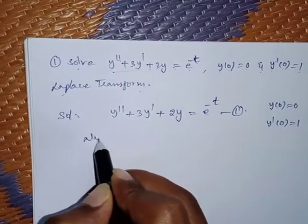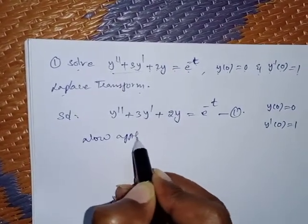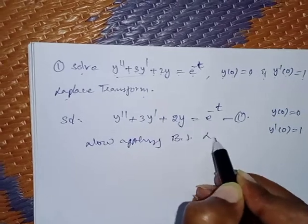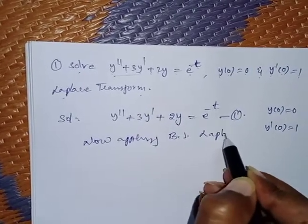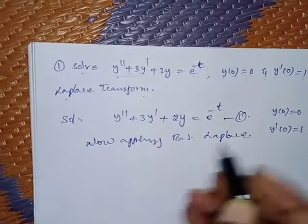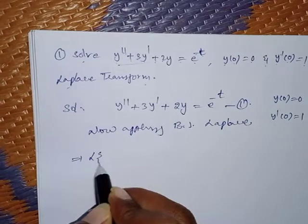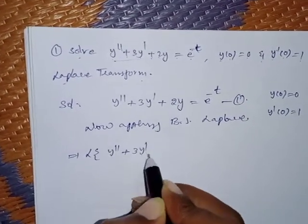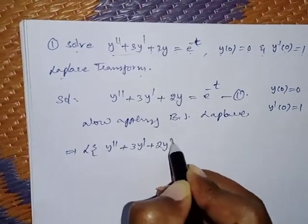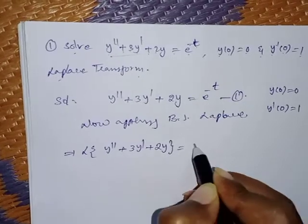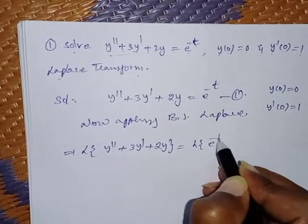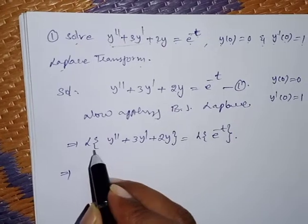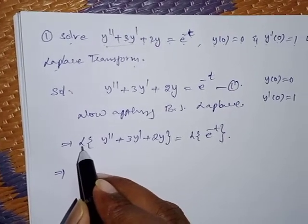Now applying the Laplace transform to both sides: L{y'' + 3y' + 2y} = L{e^(-t)}. Observe the left-hand side where we have the Laplace transform of the polynomial terms.